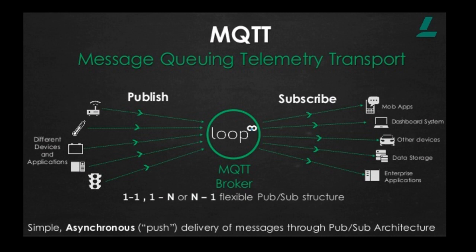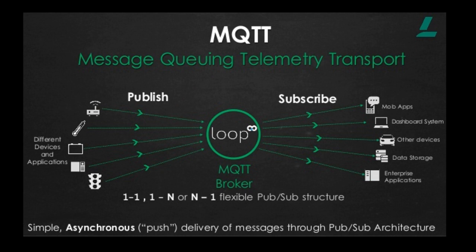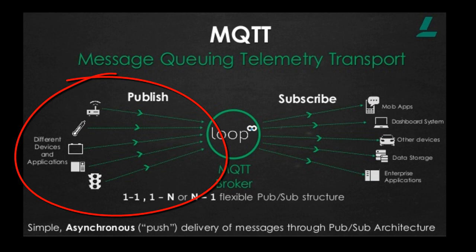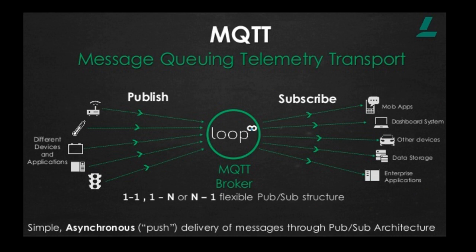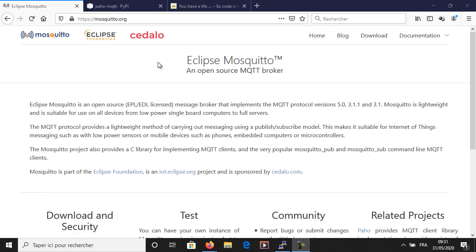In the MQTT architecture you have a server called a broker. The broker handles communication between the different devices — it could be a Windows machine, a Mac, or even a Raspberry Pi. The devices that send data are called publishers; the devices that receive data are called subscribers. To communicate, they must use the same topic. The publisher sends data anytime it wants, and the subscriber subscribes to the topic and waits — anytime data from a publisher arrives, the subscriber will get it.